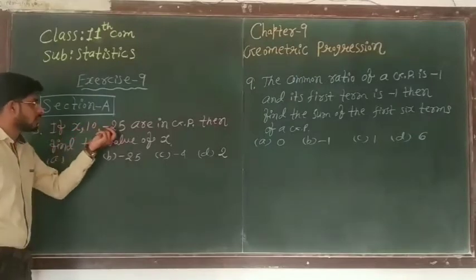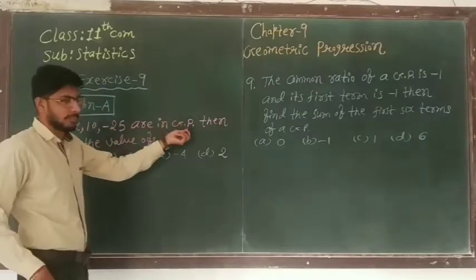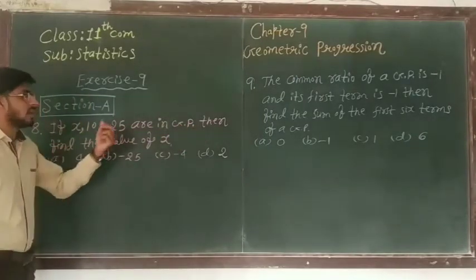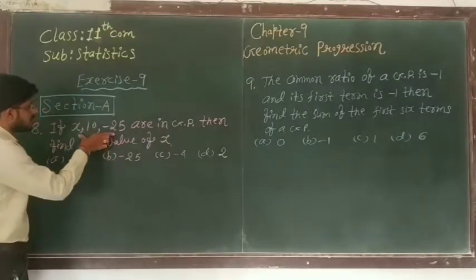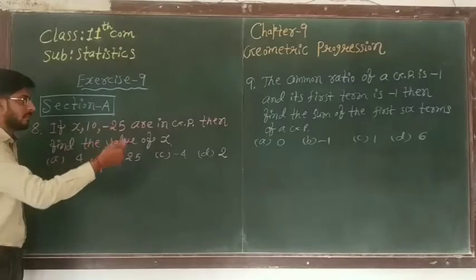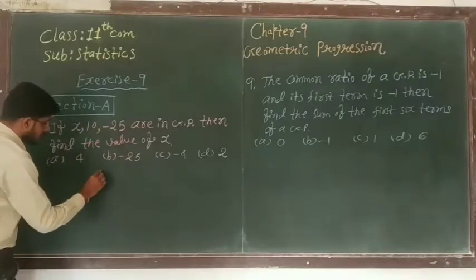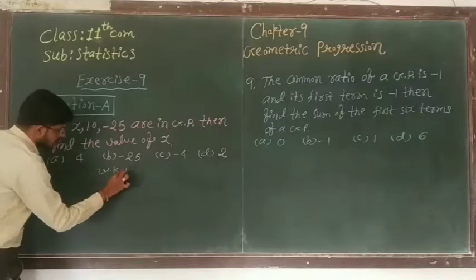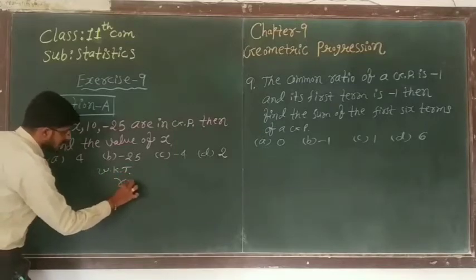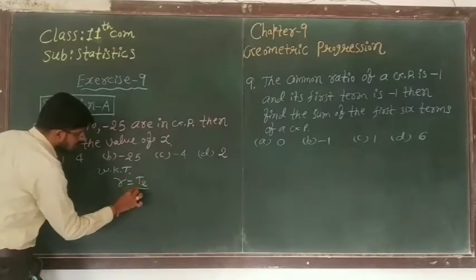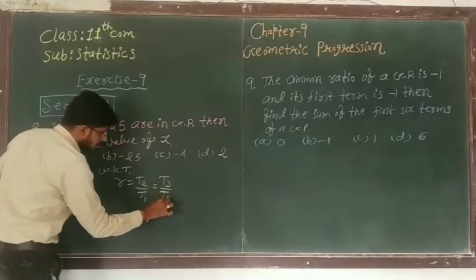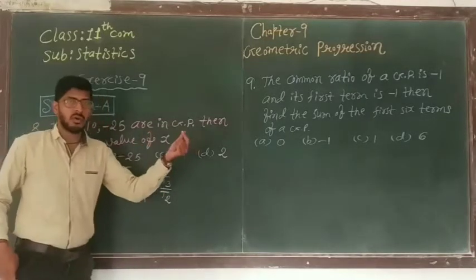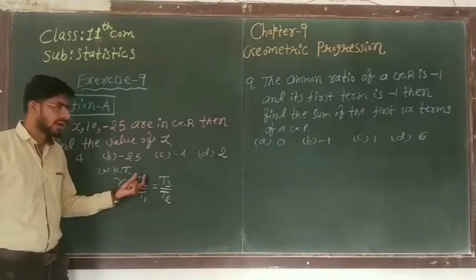Next, 8th number. If x, 10, minus 25 are in GP, then find the value of x. So here given 3 terms are in GP. We know that in any GP, r equal to t2 upon t1, also we can write t3 upon t2.